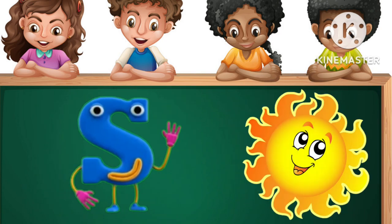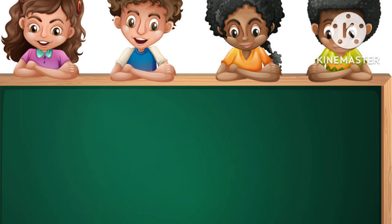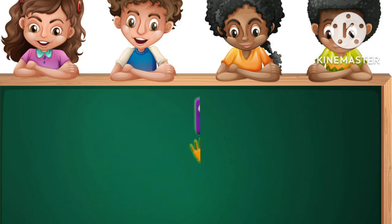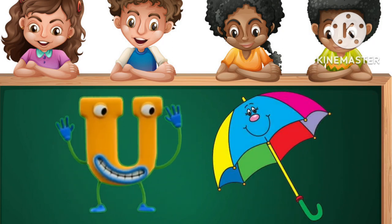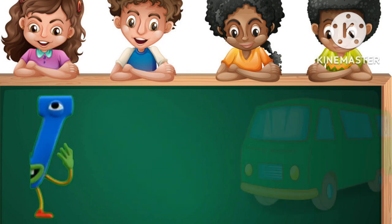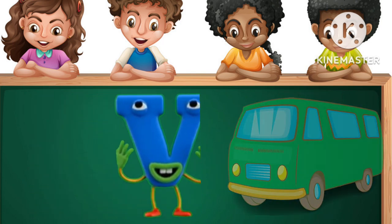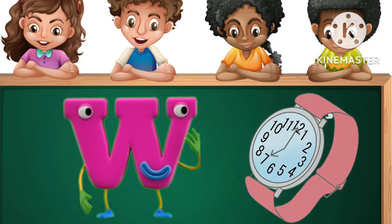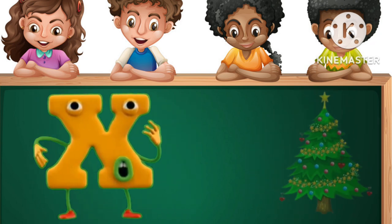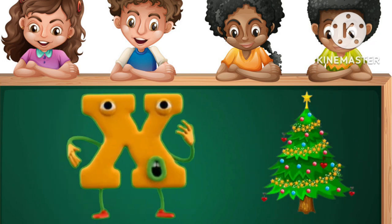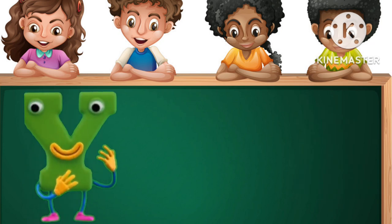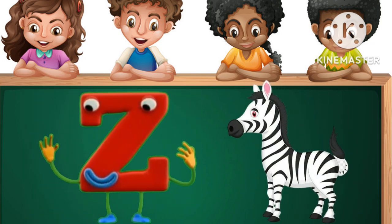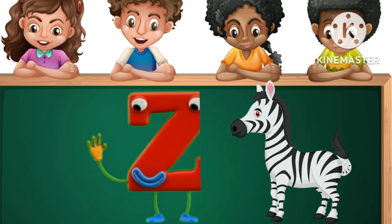S for Sun. T for Tiger. U for Amelia. B for Wind. W for Watch. X for X-3. Y for Yak. Z for Zebra.